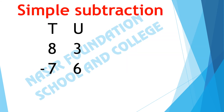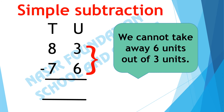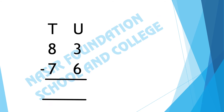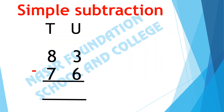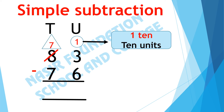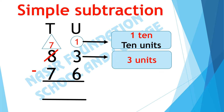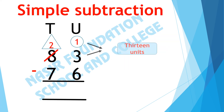Here we have 2 different numbers. We have to subtract 6 units out of 3 units. We cannot take away 6 units out of 3 units, so we borrow 1 ten from 8 tens — here it leaves 7. Now we have 1 ten meaning 10 units, and there are 3 more units. 1 ten and 3 units makes 13 units.